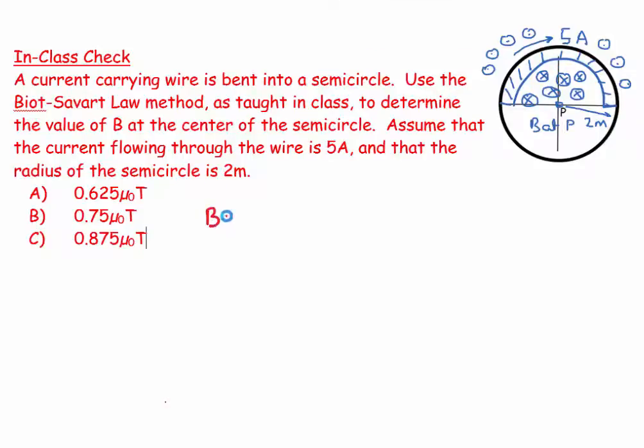Biot-Savart's law says that B is equal to μ₀I over 4π times the integral of ds crossed with r̂ over r squared. And so I need to figure out what on earth that is talking about.